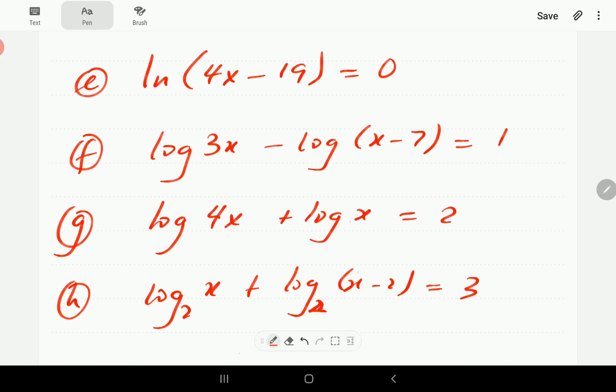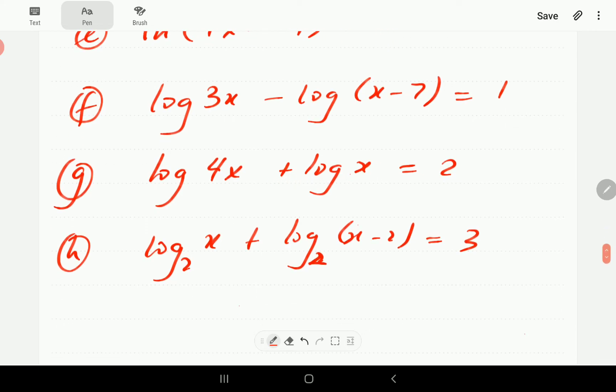The first one got ln 4x minus 19 equals to 0. The second one got log of 3x minus log of x minus 7 equal to 1. The third one got log of 4x plus log of x equal to 2. And the last one got log of x base 2 plus log of x minus 2 base 2 equal to 3.